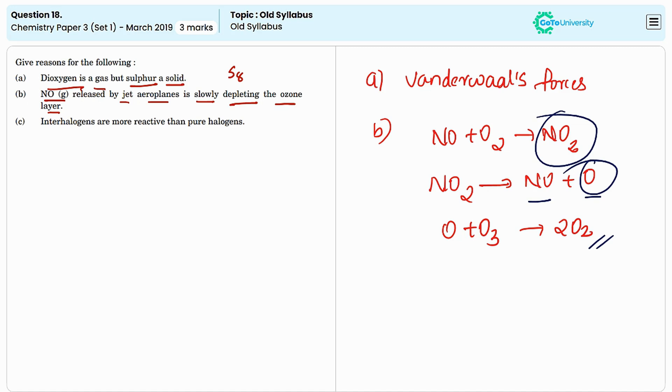The third statement is, interhalogens are more reactive than pure halogens. The interhalogen compounds such as iodine monochloride, that is ICl, and iodine monobromide such as IBr, are generally more reactive than the pure halogens, due to their unique electronic properties.